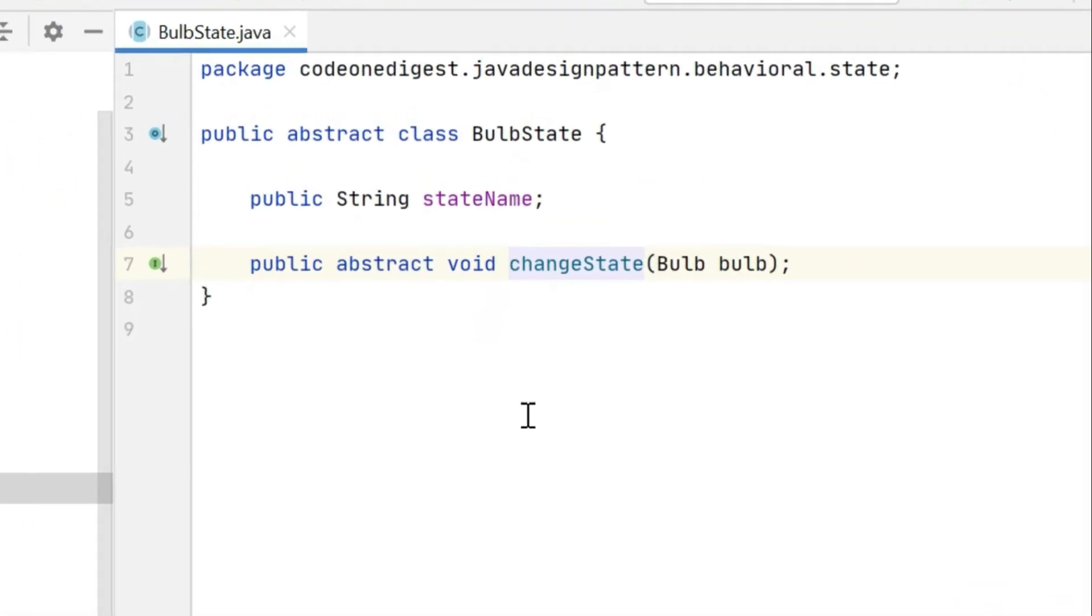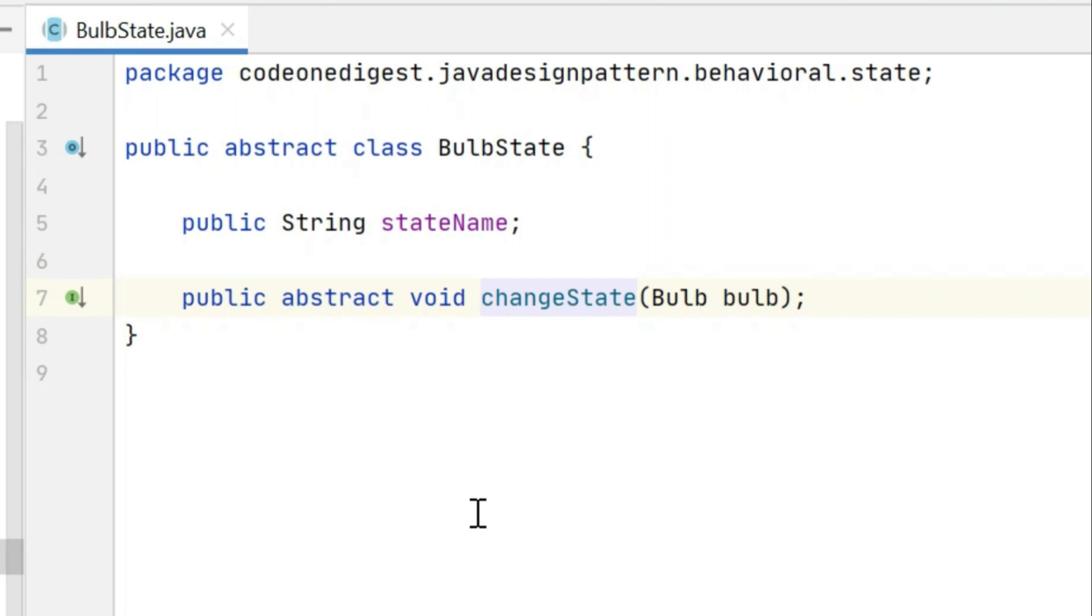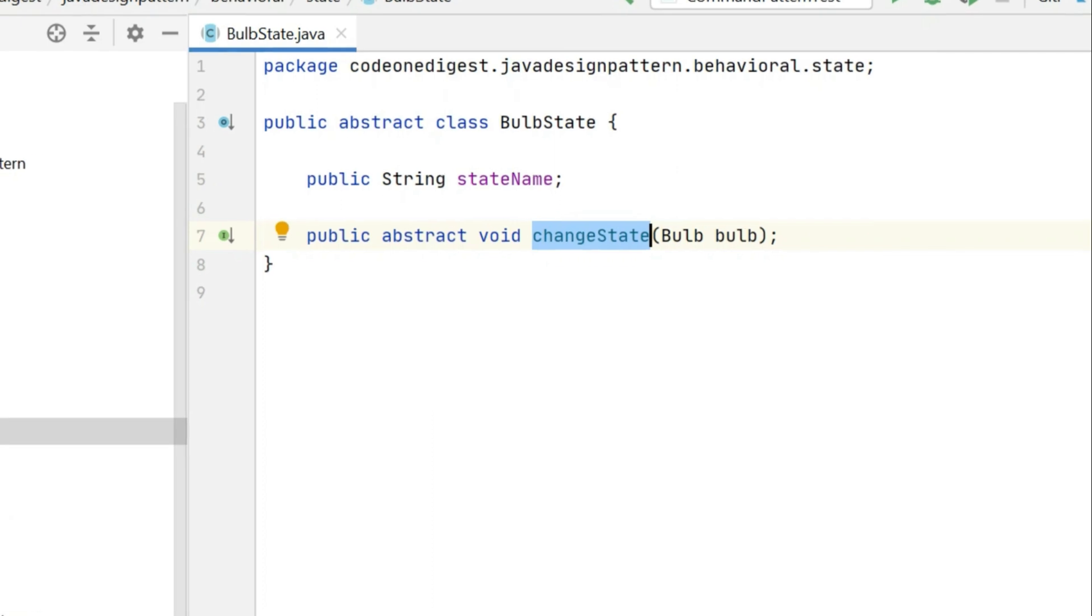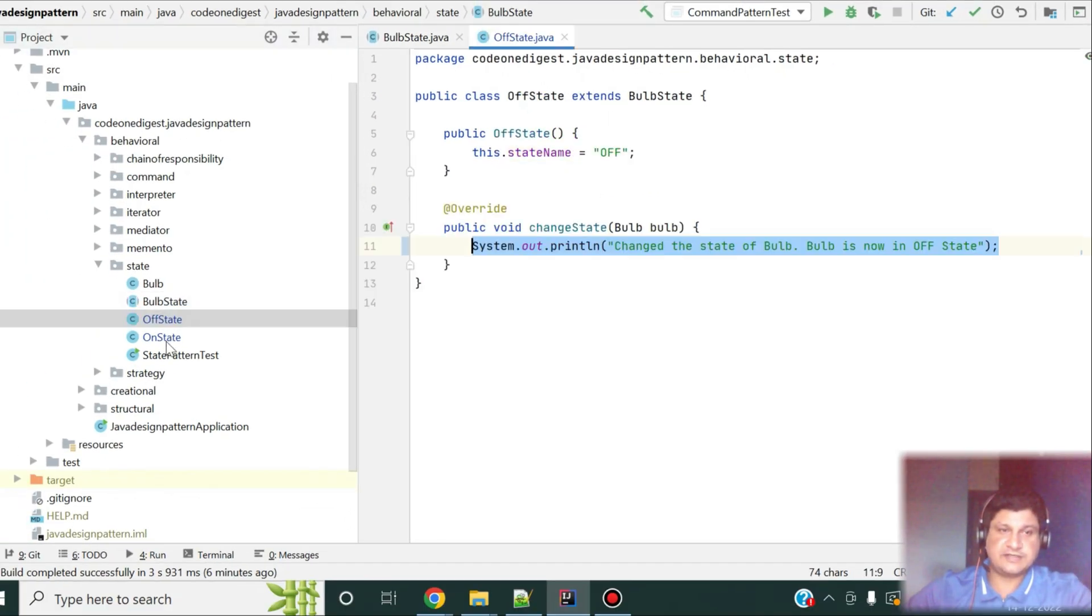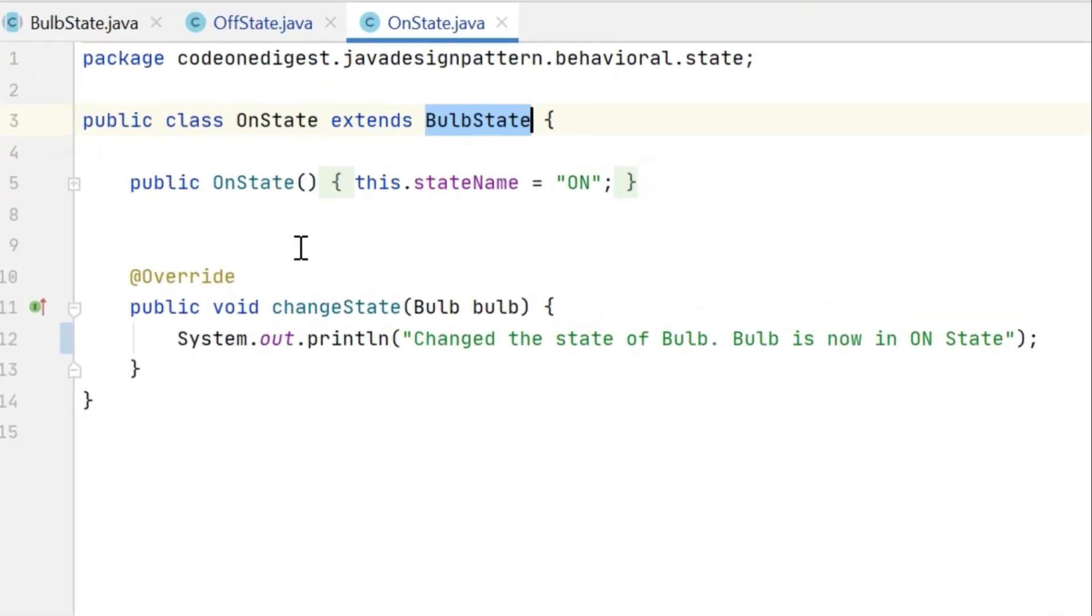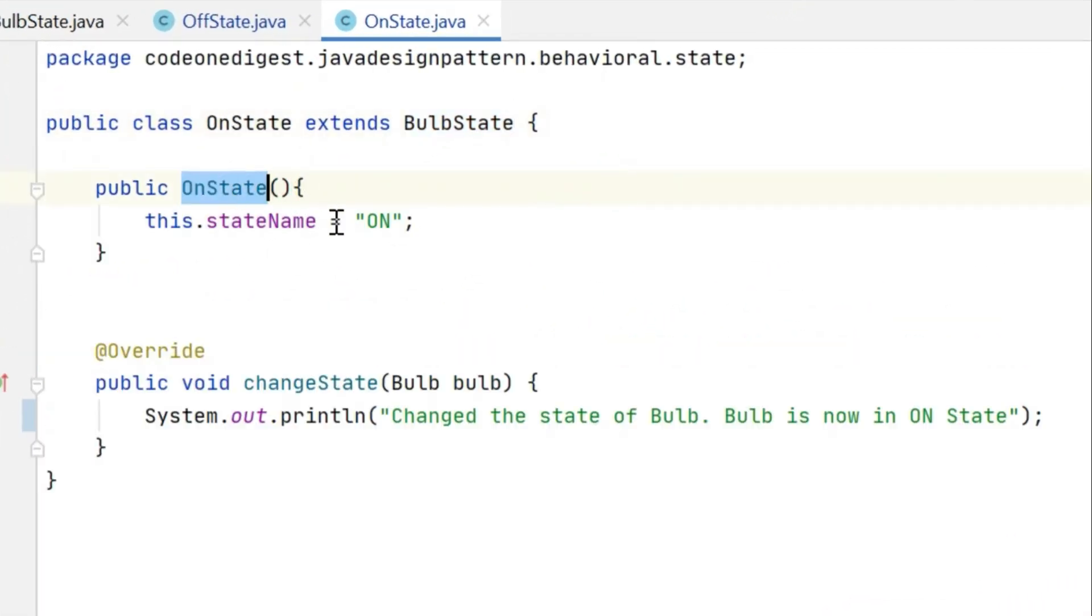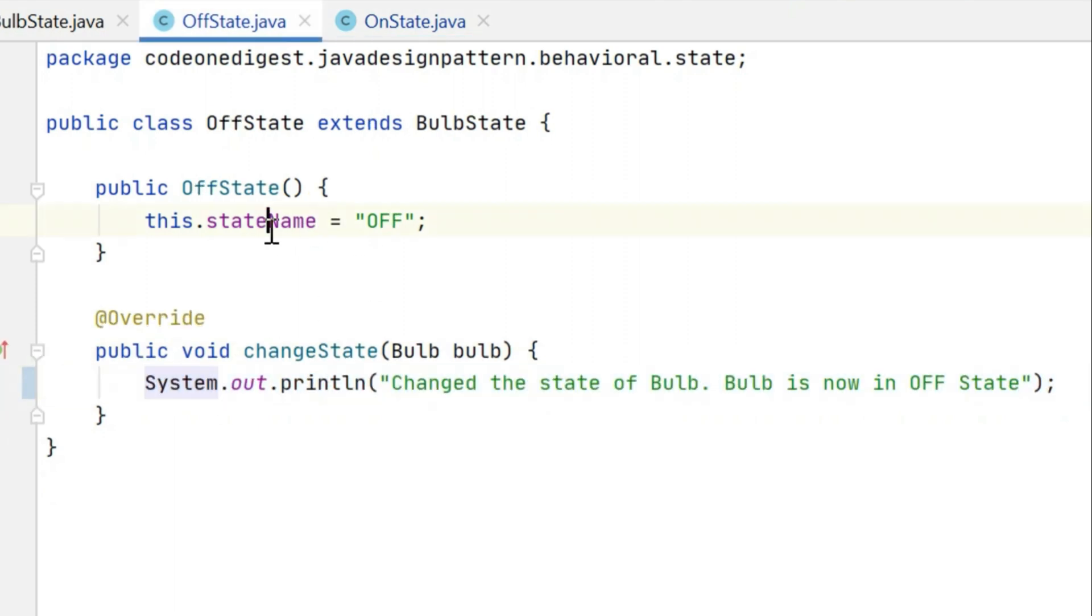Because we are talking here about state pattern, we know the object changes the behavior when its internal state changes. So, this is the state what I have defined. In this state, I have a name of the state and method abstract method change state button. Then, I have implementation of off state and on state. In this class, I am extending the bulb state class. Then, in constructor, I am setting the state name to on for on and off for off. Then, in change state, I am printing that the state of the bulb has changed. And now, it is in on state. Same way, in off, I am setting the state name to off and saying that, change the state of the bulb. And the bulb is now in off state.